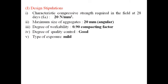Let us take an example of M20. The design stipulations are: characteristic compressive strength required in the field after 28 days of curing, that is fck, is 20 MPa. Maximum size of coarse aggregates to be used is 20 mm and the coarse aggregates are angular in nature. Degree of workability measured by compacting factor test is 0.9, degree of quality control is good, and type of exposure is mild.